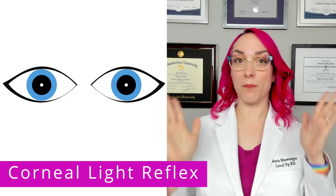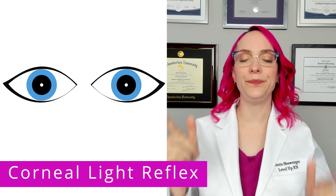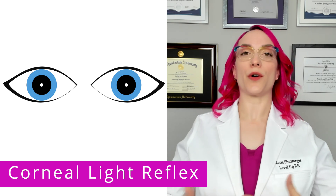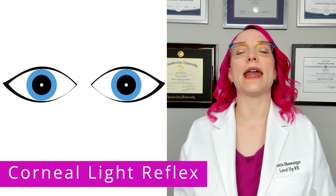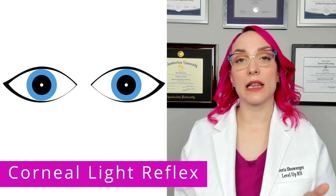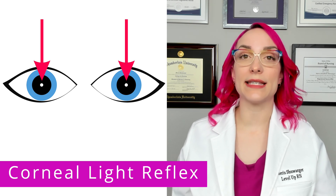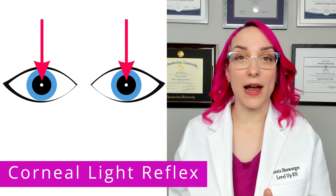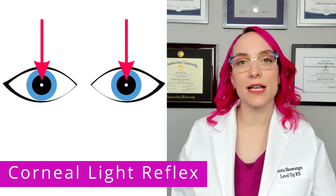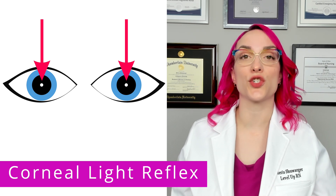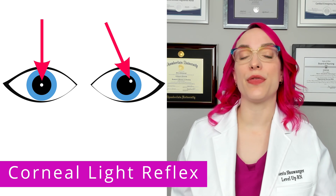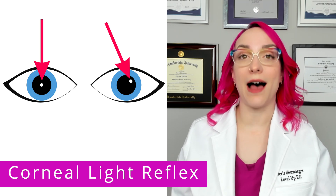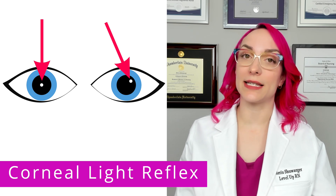What I'm looking for is I want my patient to look straight ahead, and I want to see where that light I'm shining is reflected in their eyes. I should see it reflected in plus or minus the same area of each eye. However, if my patient has some sort of deviated eye alignment, such as strabismus, then I may see that the light appears in a different position for the deviated eye. That is what the corneal light reflex is all about.